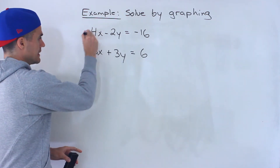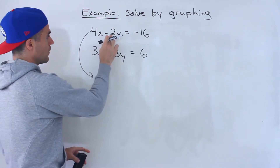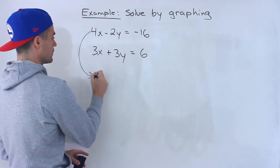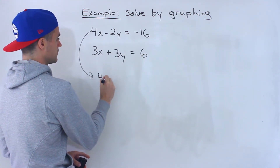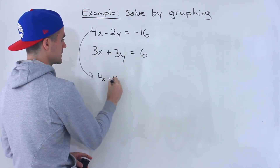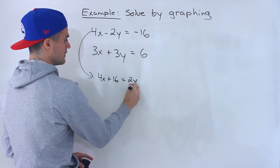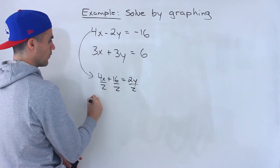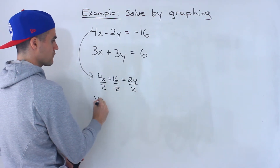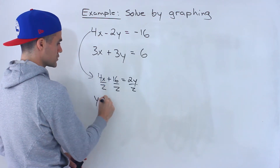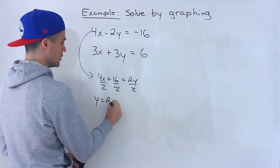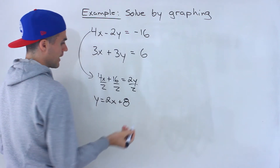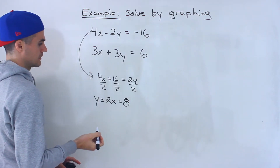So this line over here — if we isolate for y, bring the negative 2y over, bring the negative 16 over, we would have 4x plus 16 equals 2y, and then divide everything by 2. To get y by itself, we would have y equals 4 over 2, which is 2, and then this here would end up being 8.